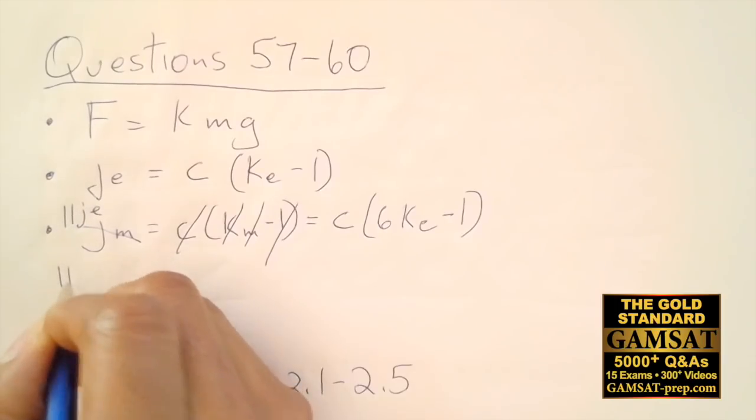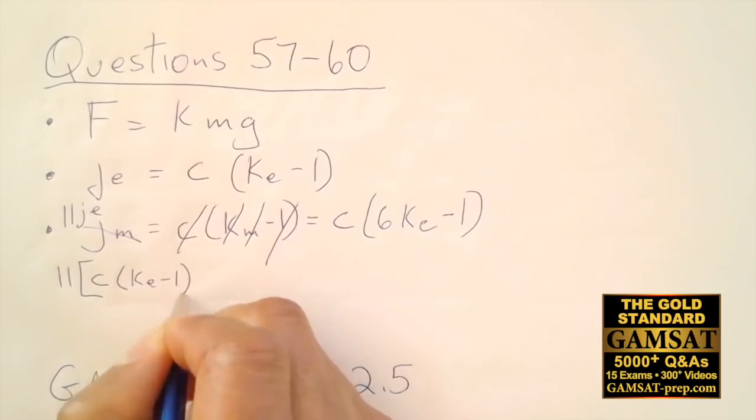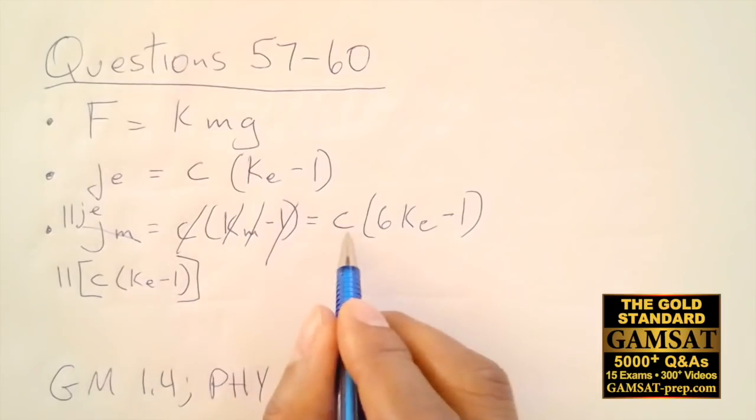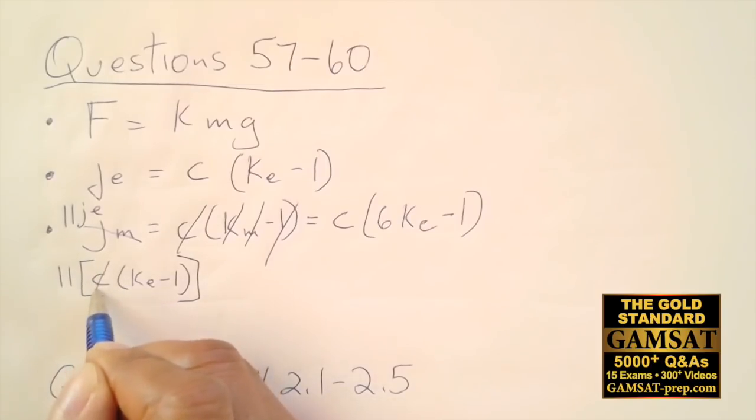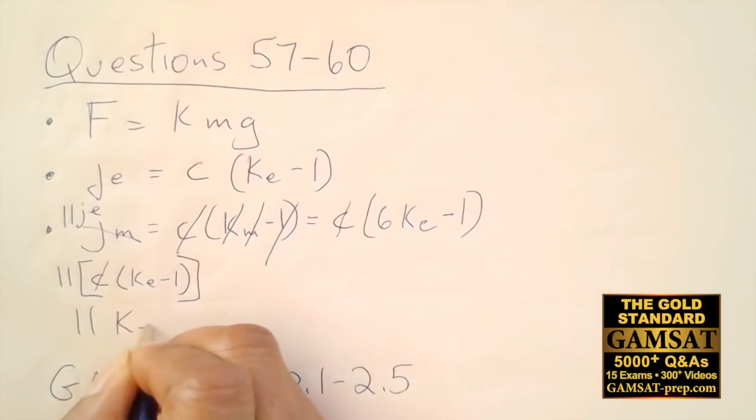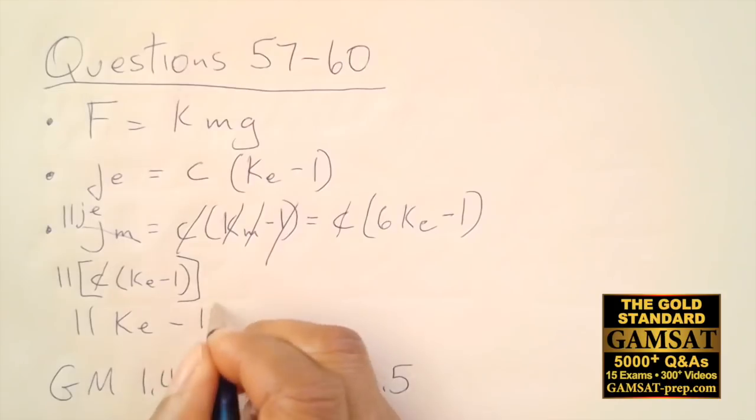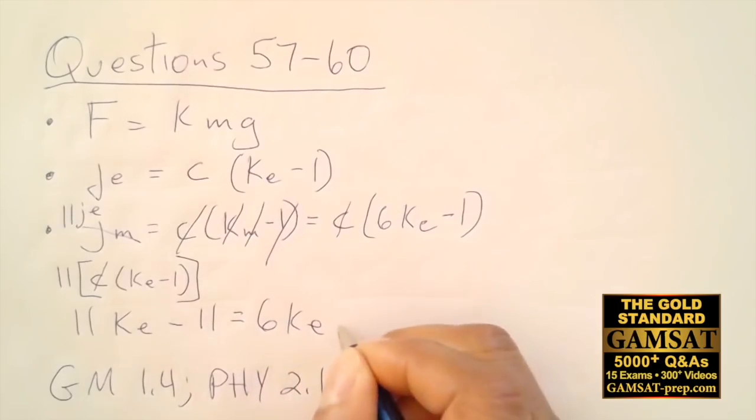I'm going to write 11, and then we have C times KE minus 1. I'm substituting for JE, and all of that is equal to this. Now I know that this is equal to that, so I can divide both sides by C, and dividing both sides by C allows me to cancel that. I would end up with 11 KE, and then 11 goes in there, so I have minus 11, and that's equal to 6 KE minus 1.